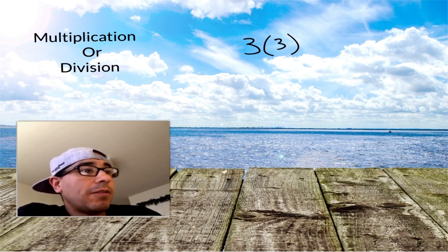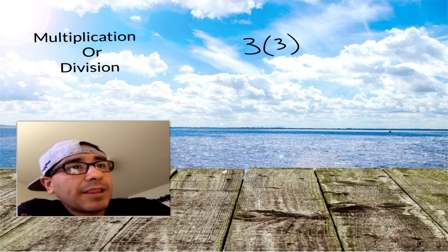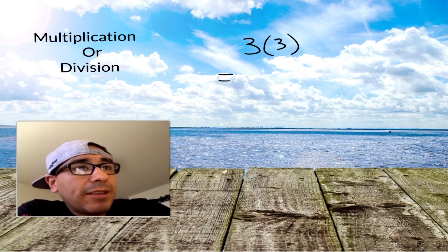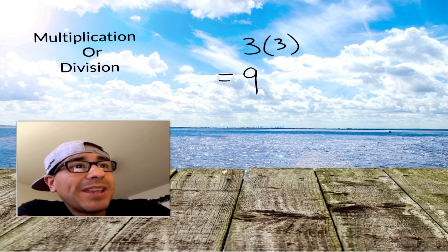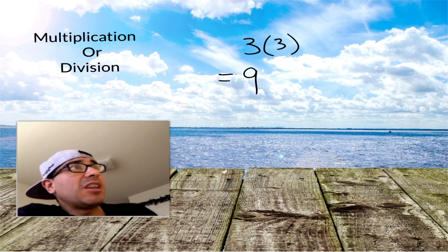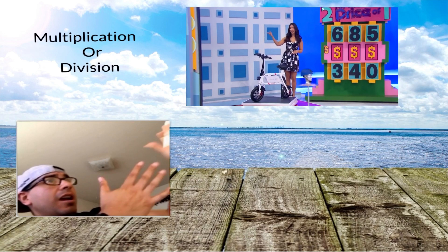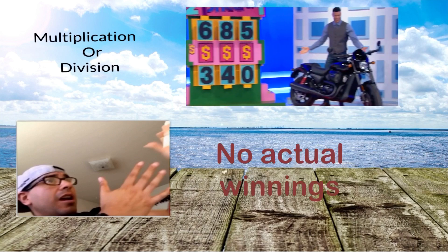All we have left is 3 times 3, and so the only thing we can do now is multiply, so we get 9. If that's what you got in your comment below, tell them what they've won Johnny: two prizes for the price of one, an electric bike and a new motorcycle.